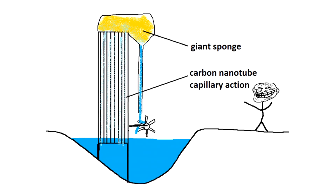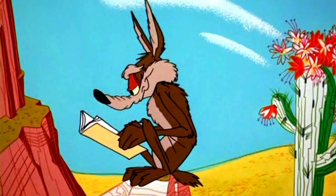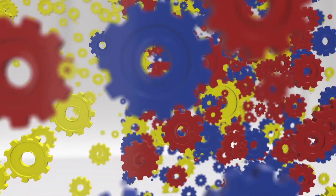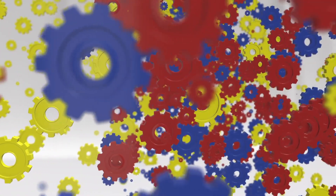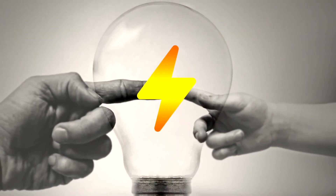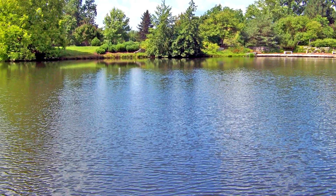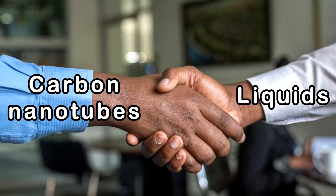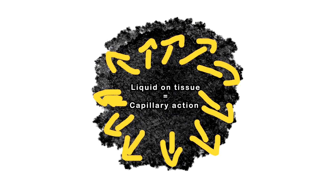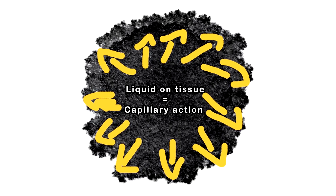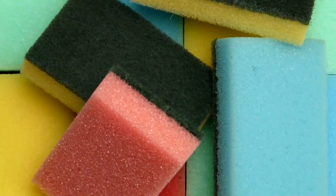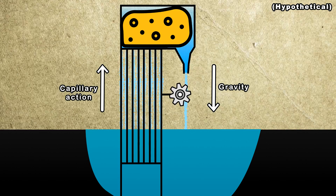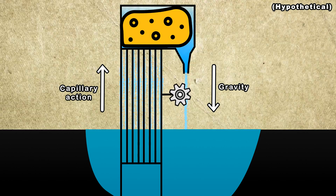There is some very interesting stuff going on here. This panel describes a system that takes advantage of capillary action to make a perpetual motion machine that supposedly generates free energy. There is a pond connected to vertically arranged carbon nanotubes, which are known to be great with liquids. They are there to exploit capillary action and send water up to a sponge, which will absorb it and then drip onto a cog, turning it to generate energy before releasing the water back to the pond.